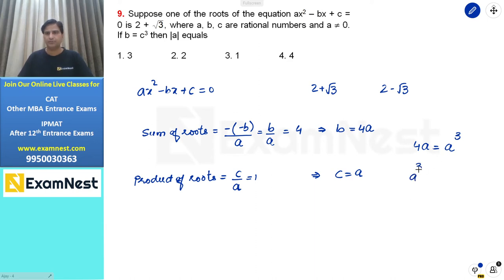So a³ - 4a = 0. Taking a common, we get a(a² - 4) = 0. This can be written as a(a + 2)(a - 2) = 0.